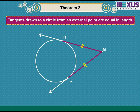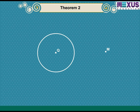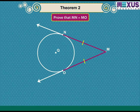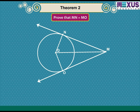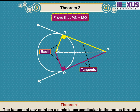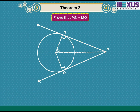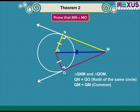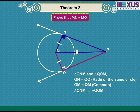Do you know that the lengths of tangents drawn from an external point to a circle are equal? Let us prove this. Draw a circle with center Q, a point M outside the circle, and two tangents MN and MO from M. We need to prove MN equals MO. Join QM, QN, and QO. Angles QNM and QOM are right angles, as these are angles between the radii and the tangents (by Theorem 1). In right triangles QNM and QOM: QN equals QO (radii of the same circle), and QM equals QM (common). Therefore, triangle QNM is congruent to triangle QOM, which gives MN equals MO.